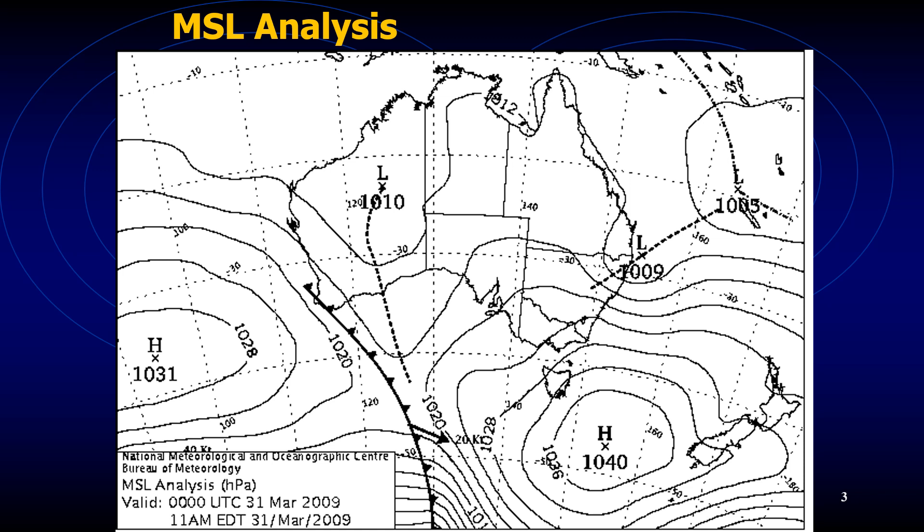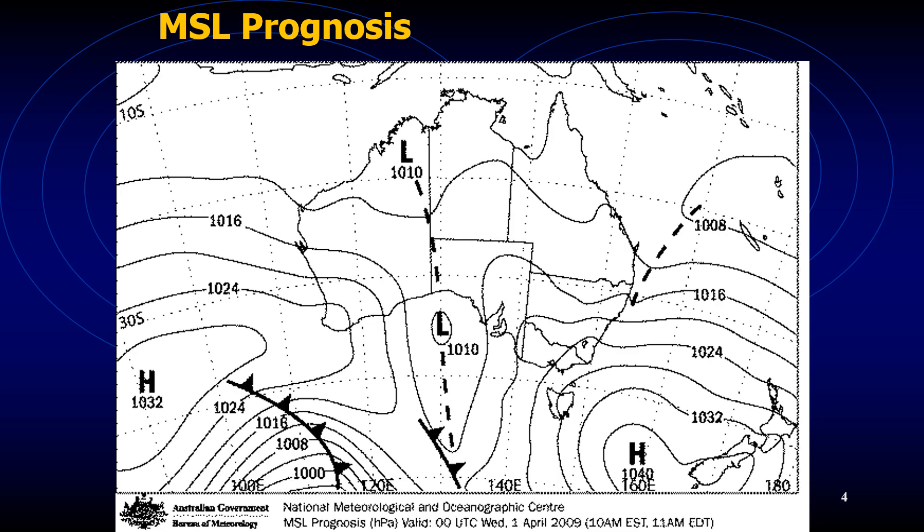Prognosis charts, on the other hand, provide an indication of future weather patterns and give the mariner an outlook for the next 24 hours, 48 hours, or more. They provide a prediction of the weather and are used by mariners to get an idea of what the weather is going to be like in the future.